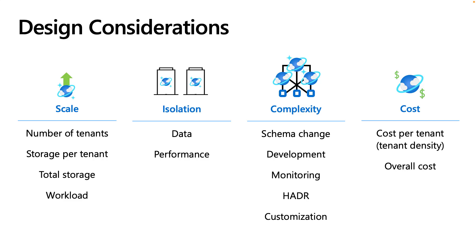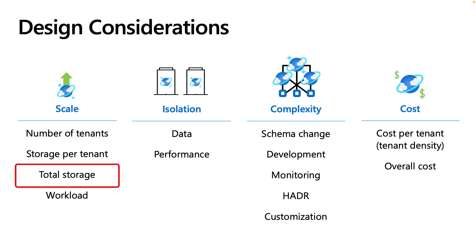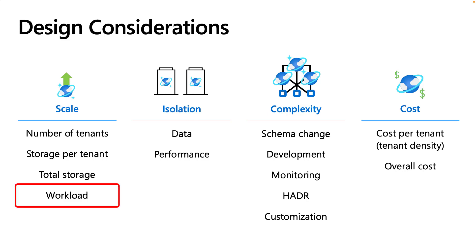For scale, we want to understand the number of tenants. If my company has thousands of tenants, that is likely going to result in an architecture that is dramatically different than if I only have five tenants. Likewise, you will want to understand the storage requirements per tenant and the total storage of all tenants. You will also need to understand the characteristics of the workload. All of these will help you evaluate different models.